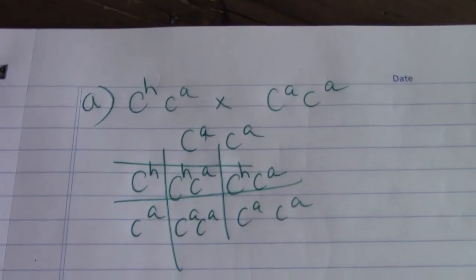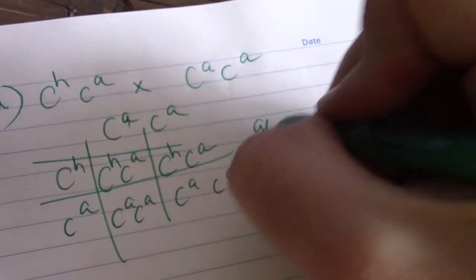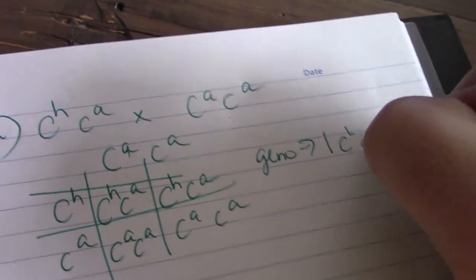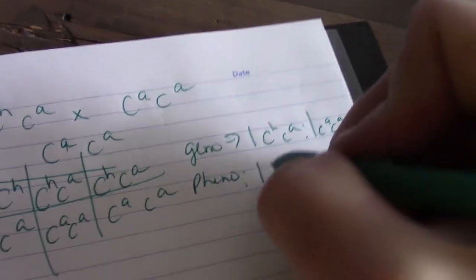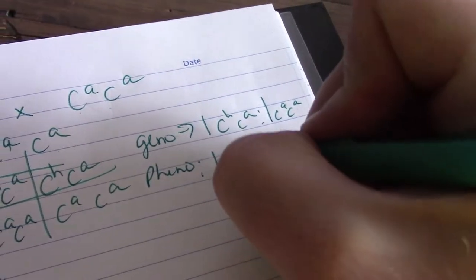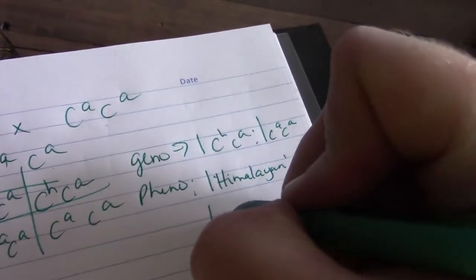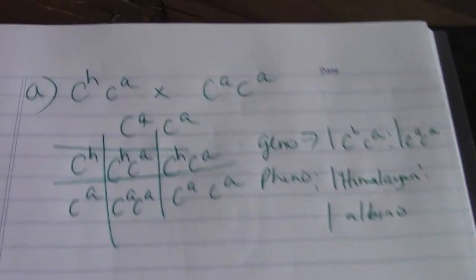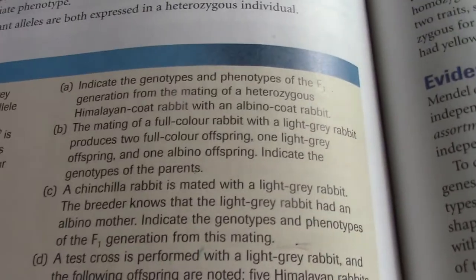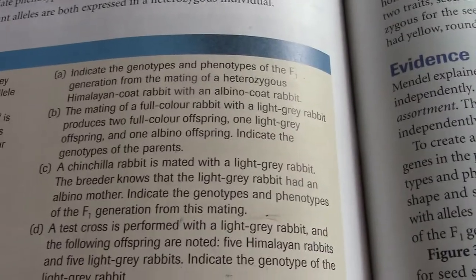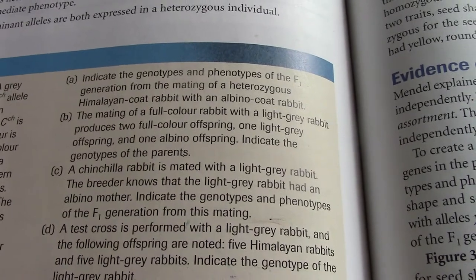All right, so here what I'm going to get is a genotype is one CHCA per one CACA. And the phenotype is going to be one Himalayan per one albino. Or 50% Himalayan, 50% albino, right? The number, the gross numbers don't matter. It's the probability that matters, right?